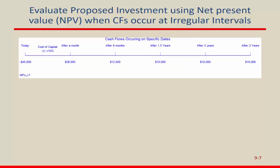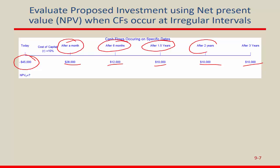Sometimes cash flows do not occur at equal time intervals — this is a very real-life situation. When you make an investment, cash might come after a month, after six months, after one and a half years, after two years, after three years. When cash flows are not at equal intervals, how can you find NPV? I have the same example: 45,000 initial investment, but the cash flows come after one month, six months, 1.5 years, two years, and three years.